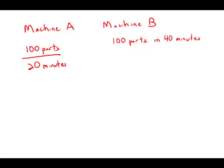Well, 100 parts in 20 minutes, I'm going to simplify that rate. If I divide that fraction down, what that means is it's making 5 parts per minute. That is the rate of machine A.